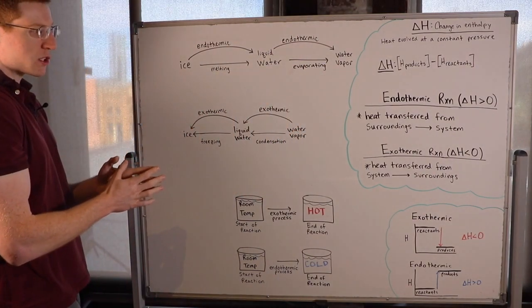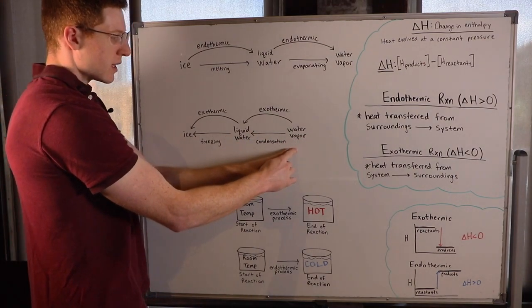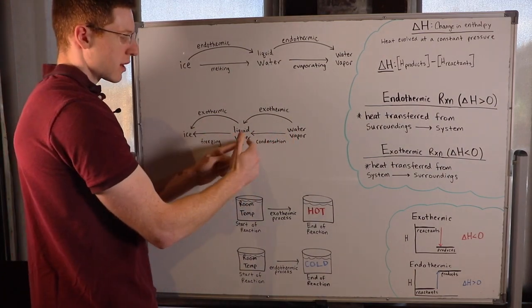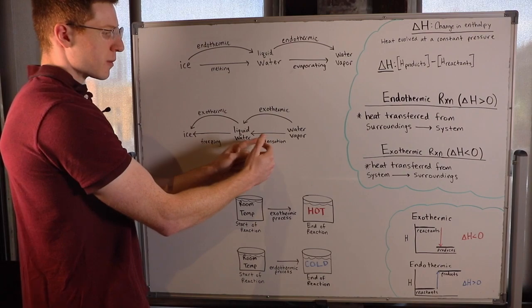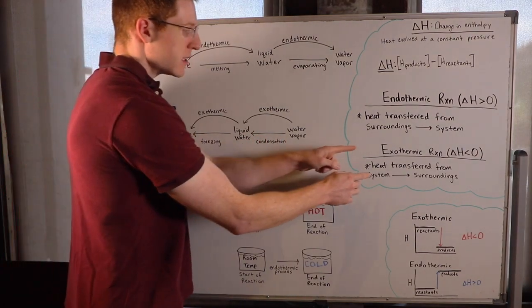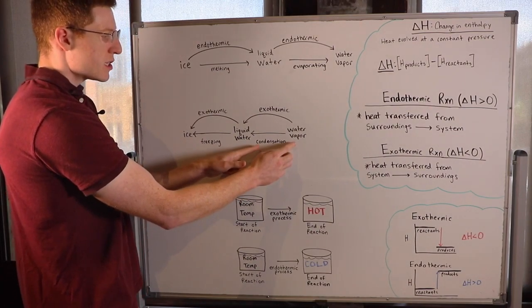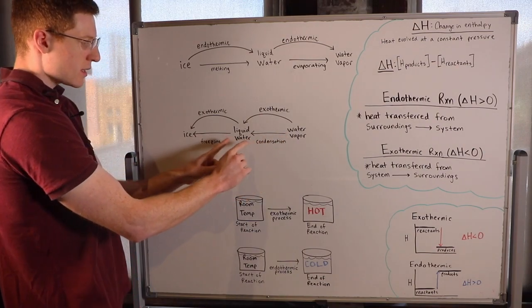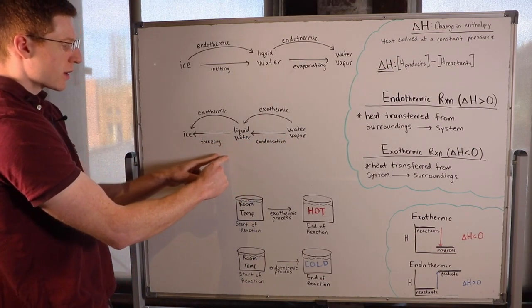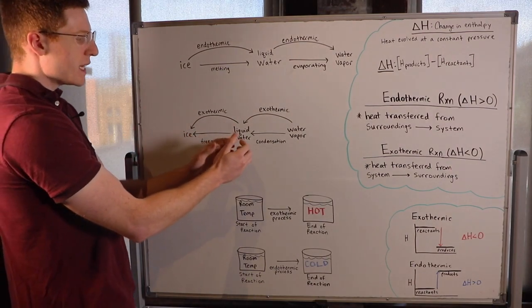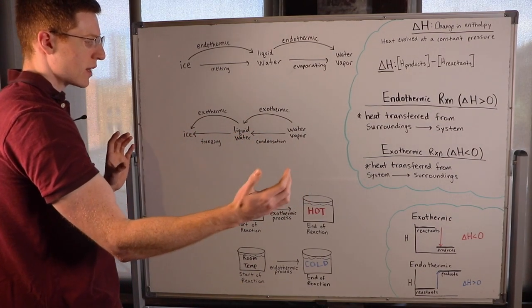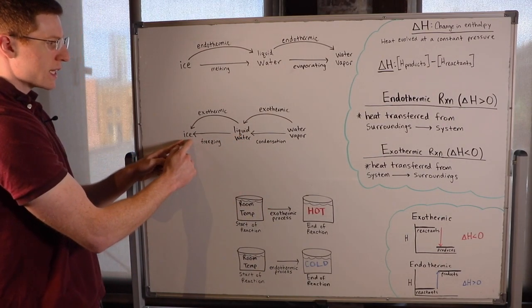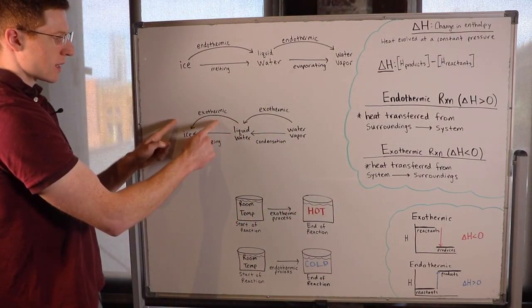We can go the opposite direction too. If we start with water vapor and condense it into liquid water, we're taking heat away from the water vapor to turn it into liquid — heat goes from the system out into the surroundings. So condensing water vapor into liquid water is an exothermic process. Similarly, if we freeze liquid water into ice, we're taking heat out of the system and into the surroundings, making the liquid water colder so it freezes. So freezing is also an exothermic process.